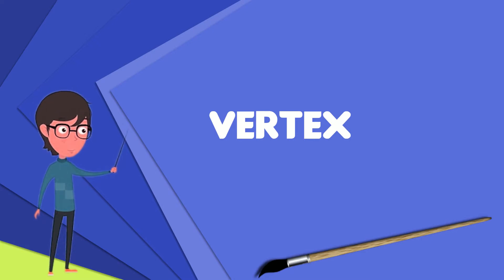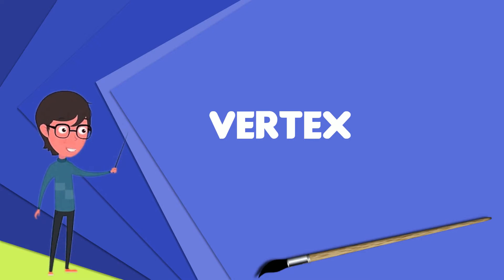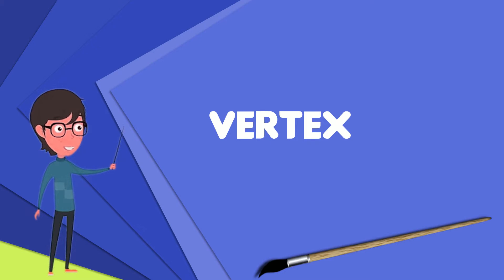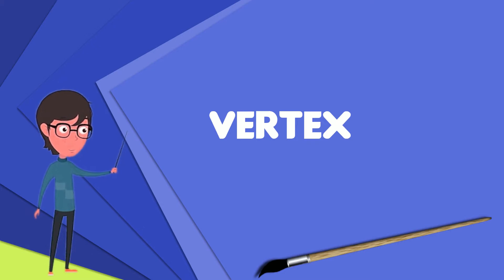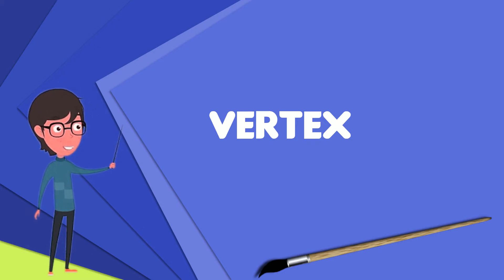In a diagram of a graph, a vertex is usually represented by a circle with a label, and an edge is represented by a line or arrow extending from one vertex to another.